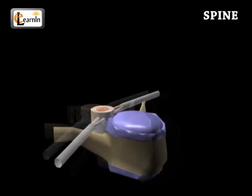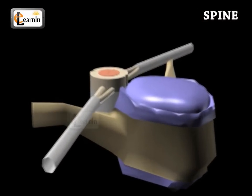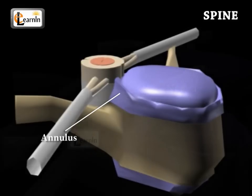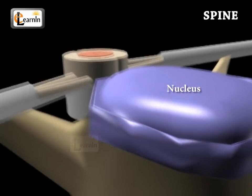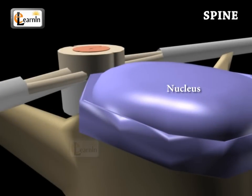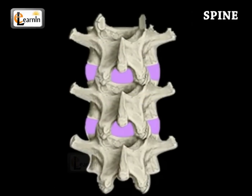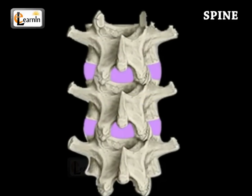Each fibrous disc is made up of two parts. The annulus is the hard outer layer of the vertebrae, and it surrounds a sponge-like center called the nucleus. There are four facet joints in each vertebra.